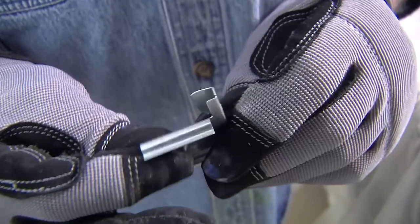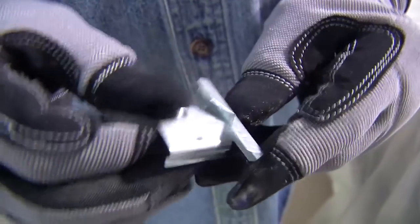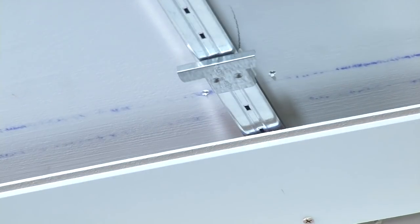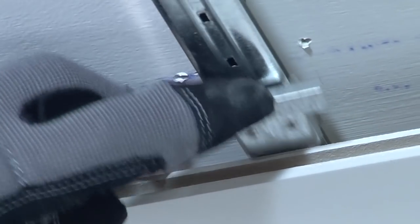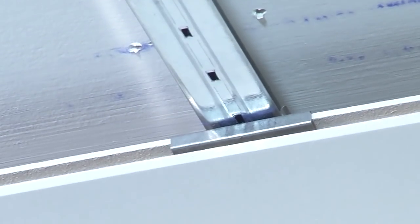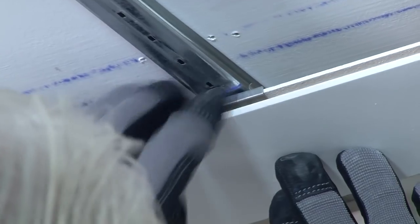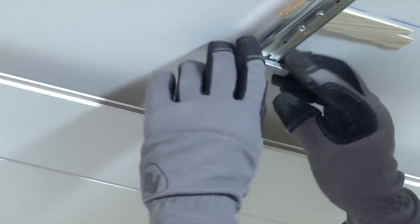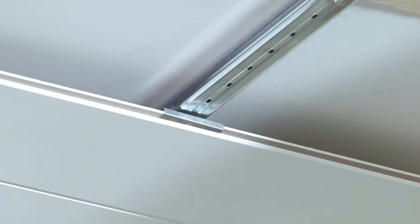These clips are designed to hold the groove side of each plank to the track. They snap on and are then slid along the track until the tab slips into the plank groove. Now, I found it easier to snap on several clips beforehand, set the plank in position, then simply slide the clips along the track until they engage the plank.